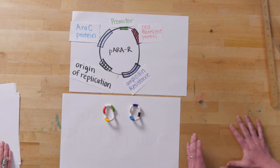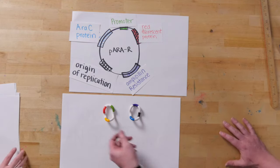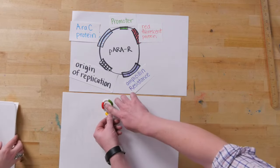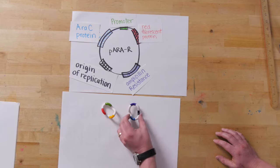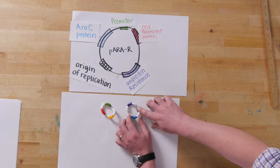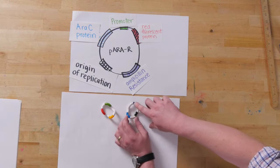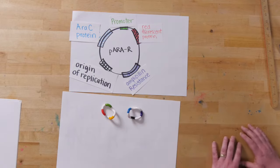For our lab experiments, we're going to start off with two individual plasmids. They each have parts of interest that we want. On this plasmid here, we have our red fluorescent protein and our promoter sequence. On the other plasmid, we have our origin of replication, our ampicillin resistance, and our araC gene.